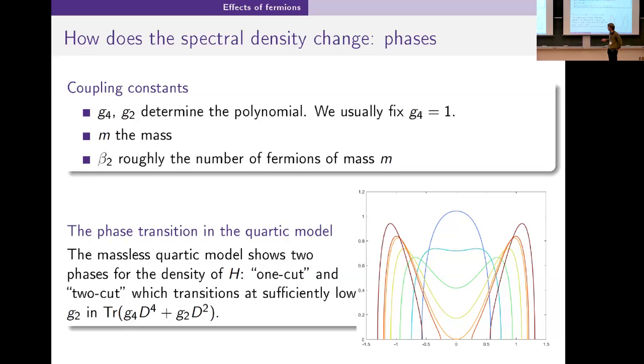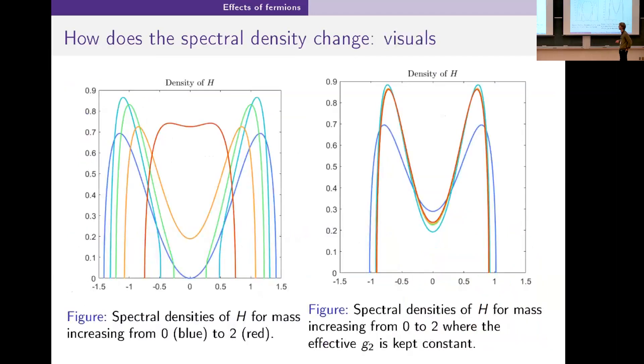I'll skip over the explanations of the coupling constants. They're just parameters of the model that we can change. I'll describe a little bit what they do. First stop is how does this picture change when we consider a mass as well. Two pictures here. Let me start on the left which is very similar to the one on the previous slide.